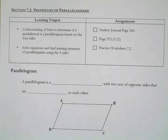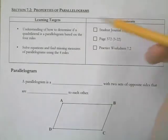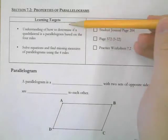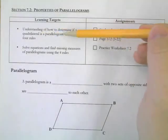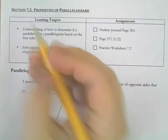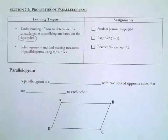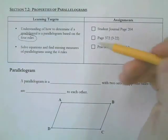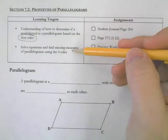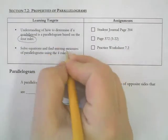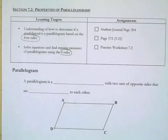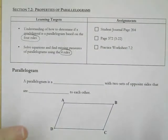This is going to be the video notes for section 7.2, Properties of Parallelograms. You have two learning targets. You need to understand how to determine if a quadrilateral is actually a parallelogram based on four rules that we're going to learn, and you also need to be able to solve equations and find missing measures using those four rules. After notes, you will have three different activities or worksheets that you need to finish.